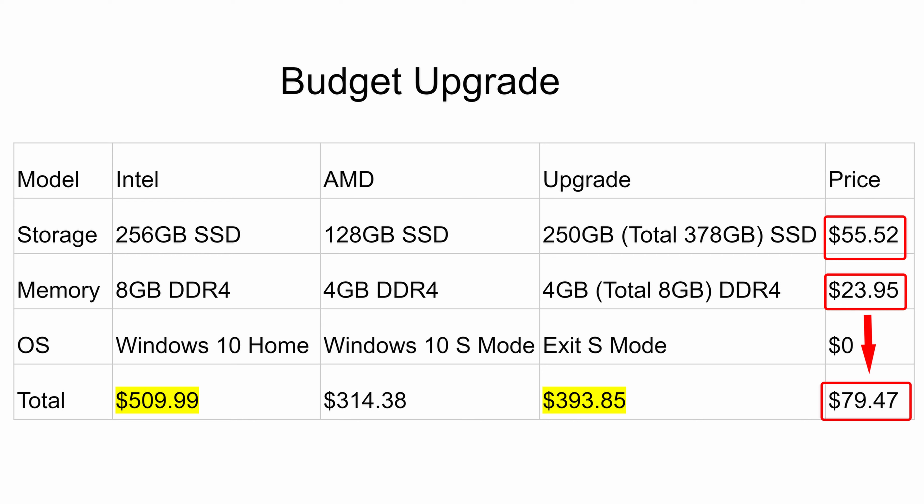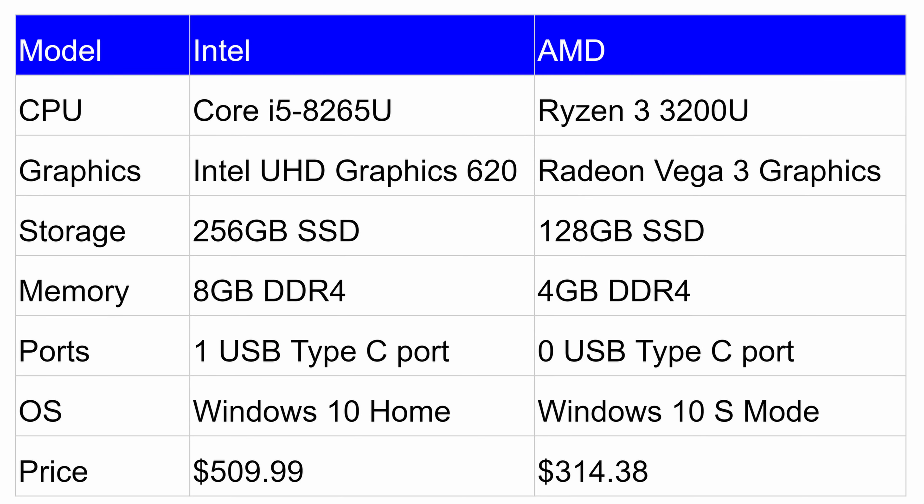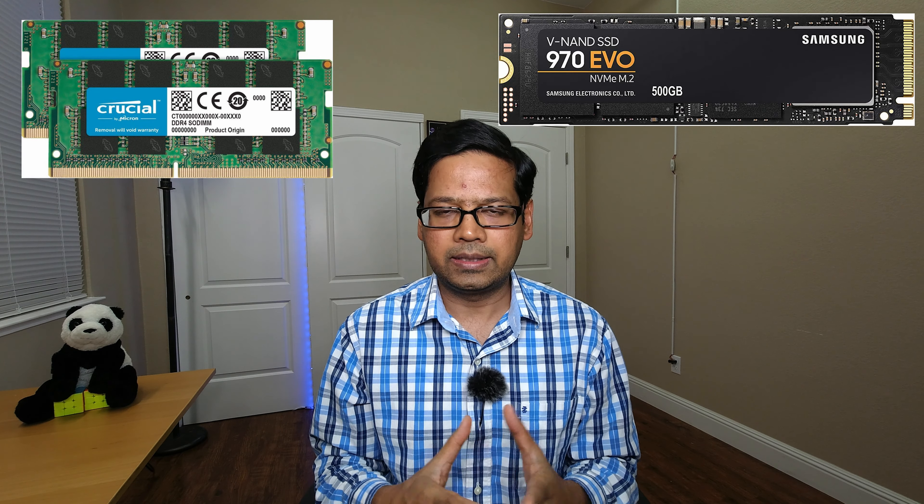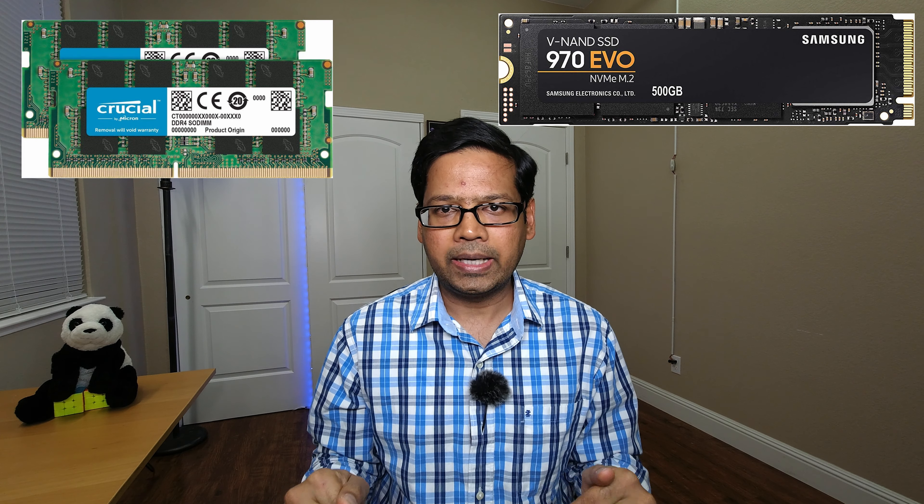So for a total of $79.47, you will have an AMD configuration with more storage than the Intel version — 378GB versus 256GB of SSD — and the same 8GB of RAM. Your total cost will be $393.85: that's the base price of $314 plus upgrades of $79.47. So even after doing those upgrades, you are still saving more than $100. I'll throw a link in the description for all compatible memory and SSD parts.